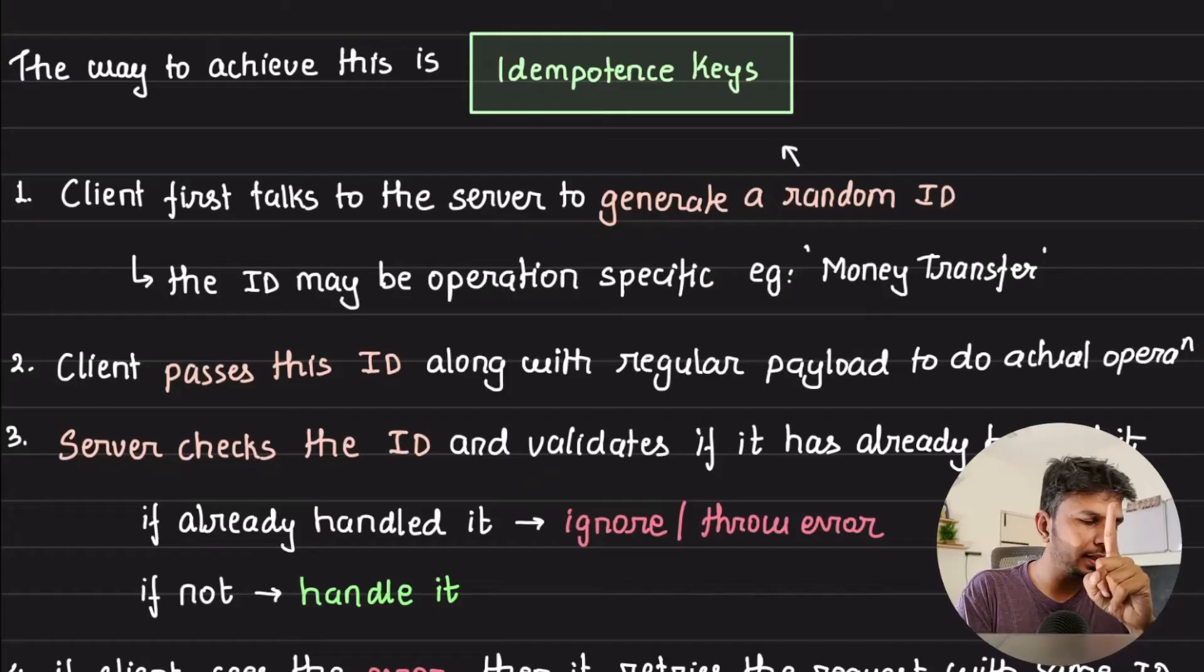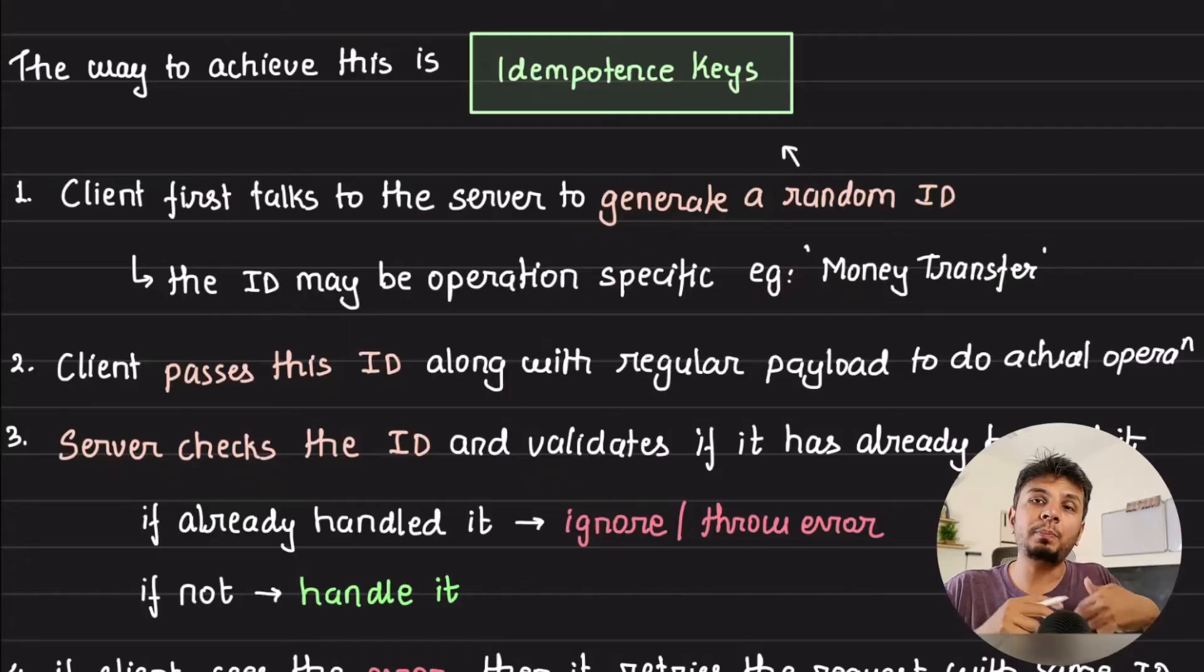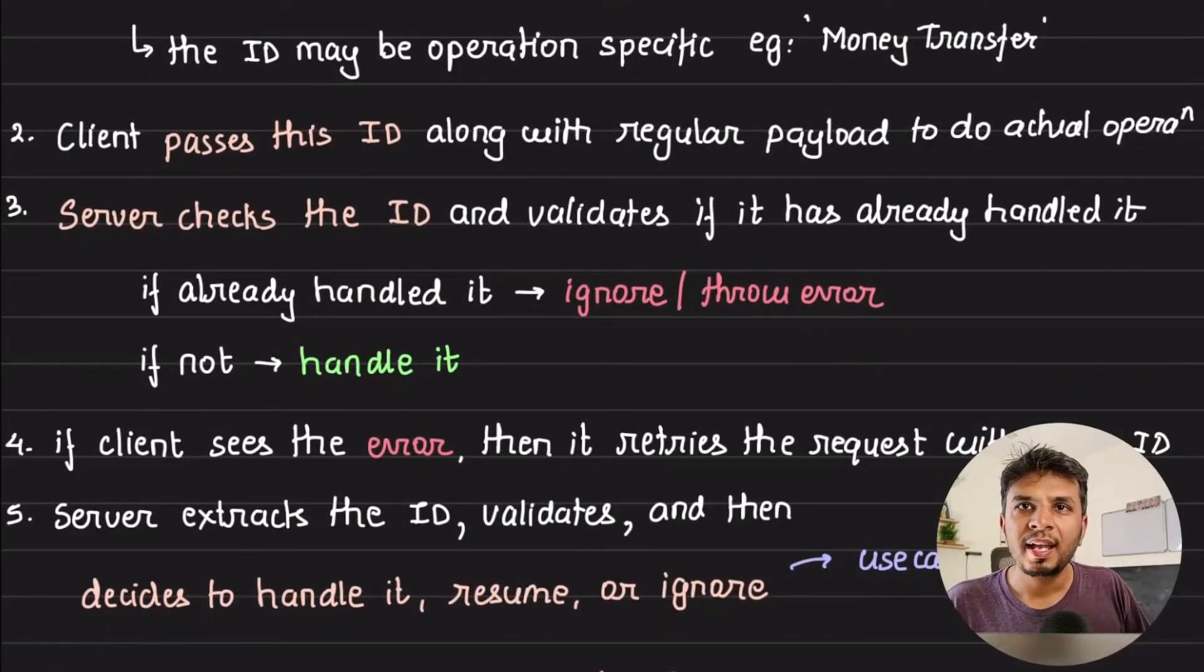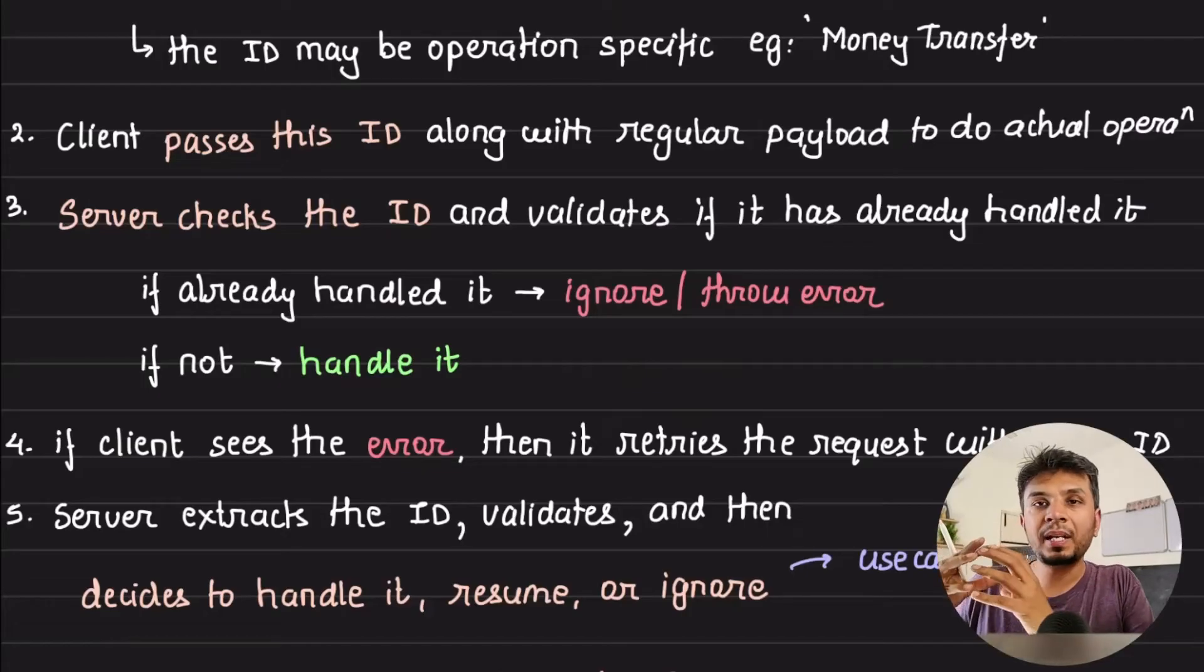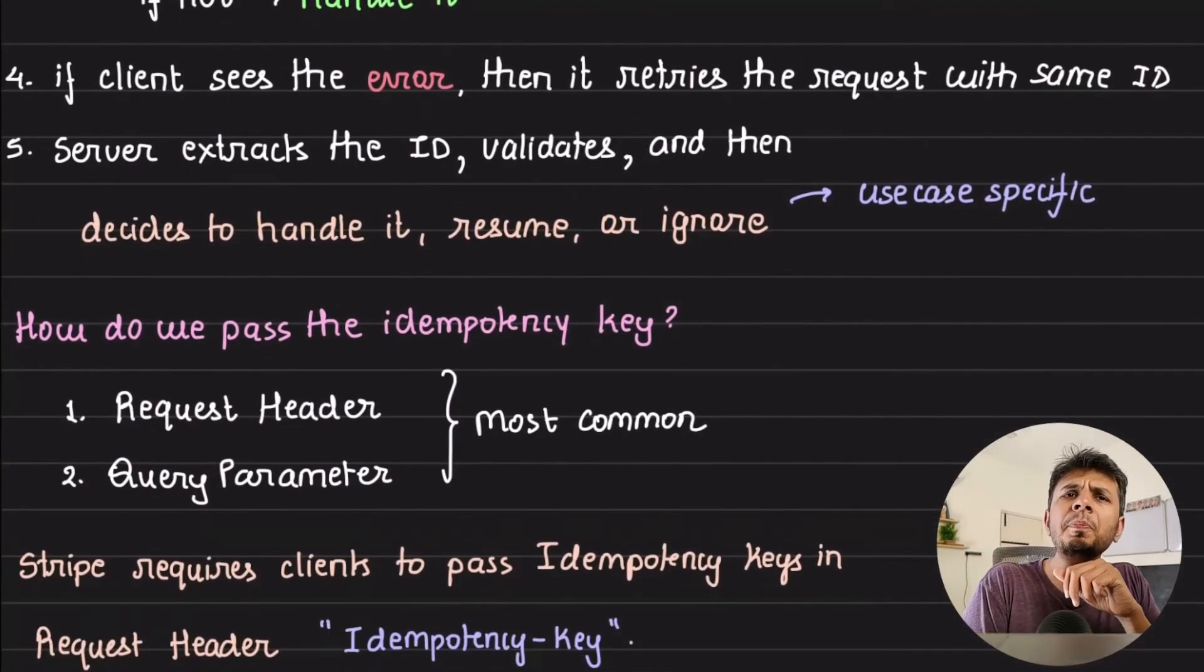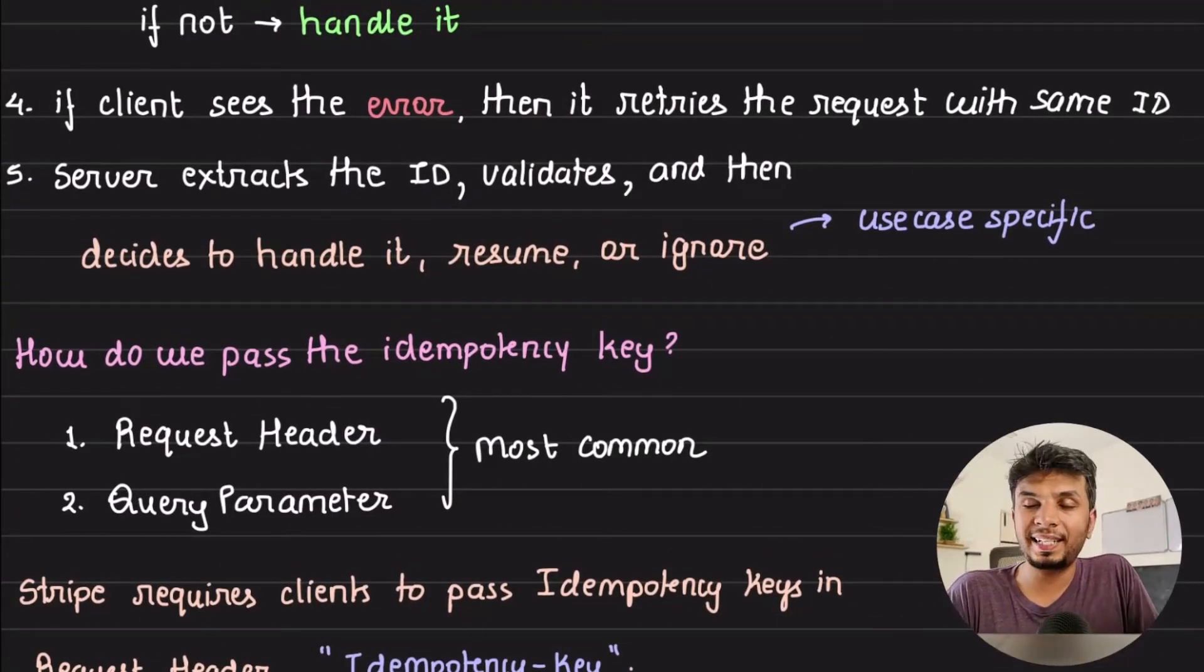Let's say your client wanted to transfer money from A to B account. First step is it talks to the server to generate a random ID. Your server generates the ID and stores the operation against which this user created that meta information. Second, your client then invokes the actual API to do the actual money transfer, and while doing that it passes the random ID that was generated, which is the idempotent key. The server then checks the ID that it got in the request and validates if it has already handled it or not. If it has already handled it then it ignores or throws the error; if not then it handles it and then updates that it has already handled this particular key.